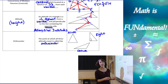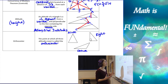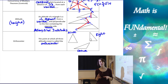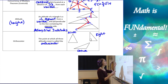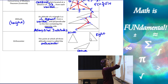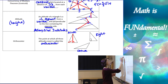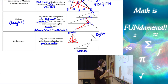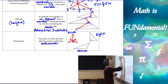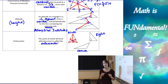The point at which all the altitudes meet is called the orthocenter. The orthocenter of a triangle is going to look a little different depending on whether you have an acute, obtuse, or right triangle. If I have an acute triangle and I draw all three altitudes — each one perpendicular to the opposite side — my orthocenter is going to be inside the triangle.